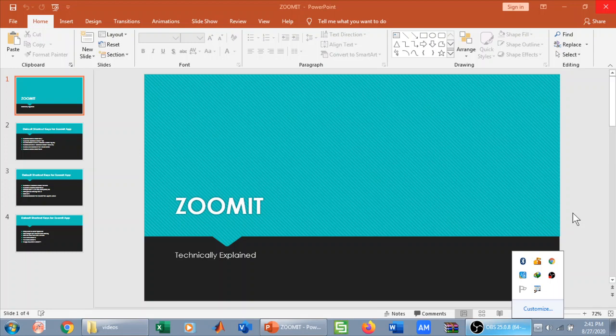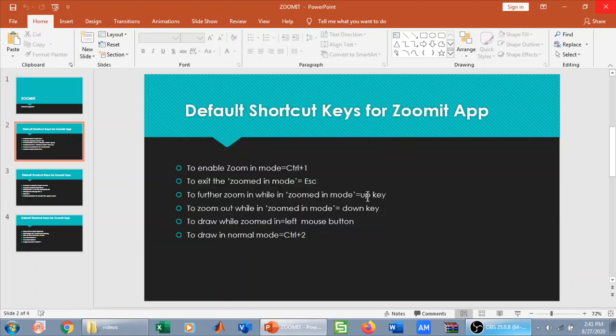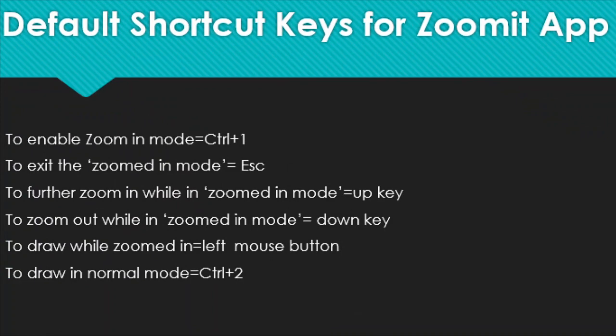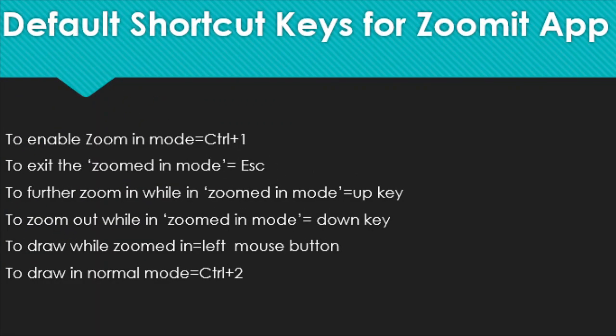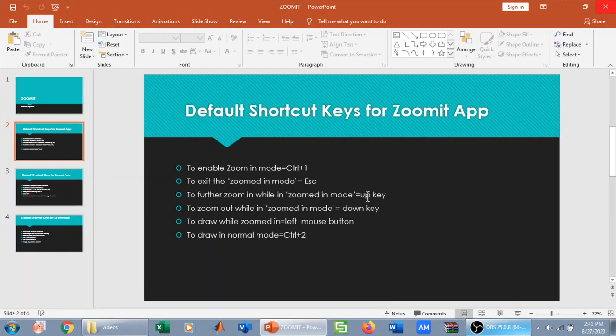Now how to use this app — we have some shortcut keys to understand. To enable zoom in mode, press Ctrl+1 on the keyboard. Let me press Ctrl+1 — we are now in zoom in mode. To exit zoom in mode, press the Escape key and we return to normal mode. So: Ctrl+1 to enable zoom in mode, Escape to return to normal mode.